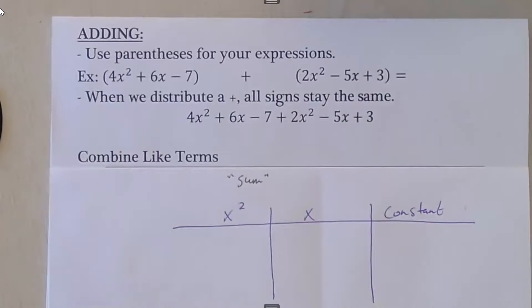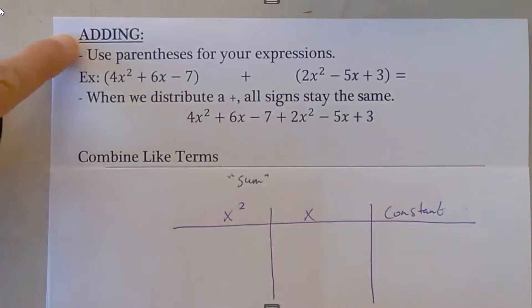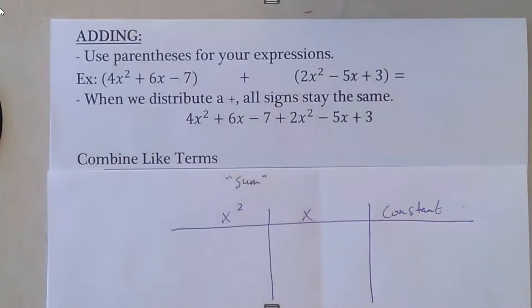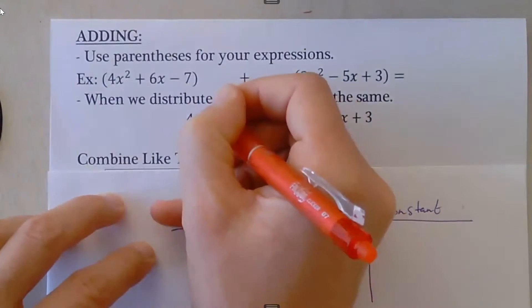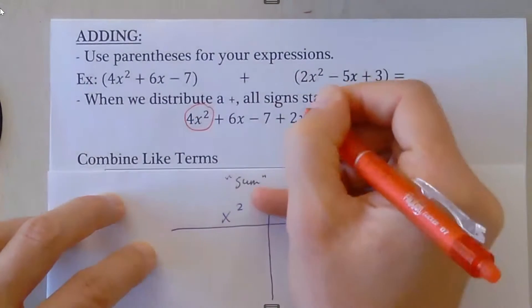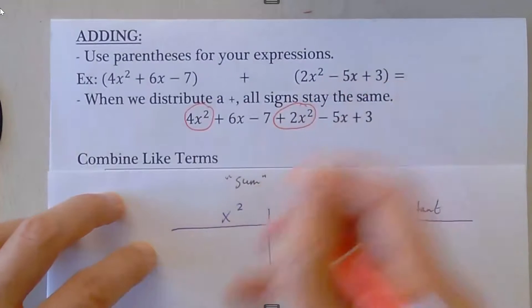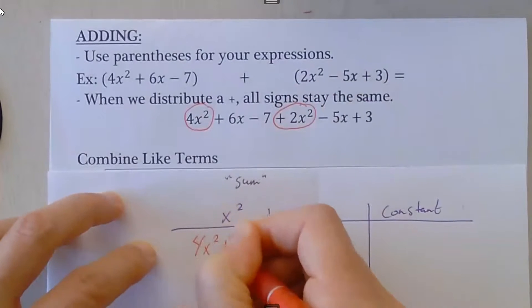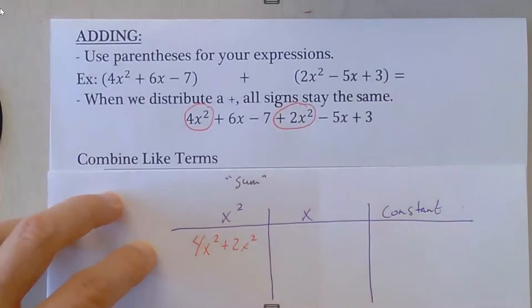So adding polynomials is combining the like terms. Our x squared terms we have 4x² plus 2x², which equals 6x².